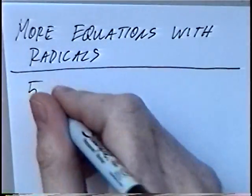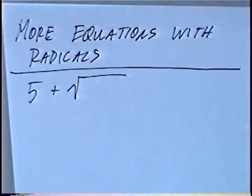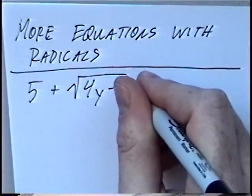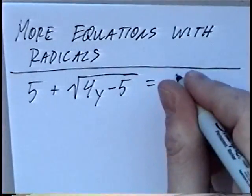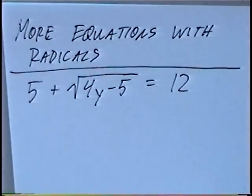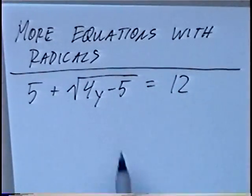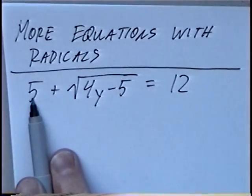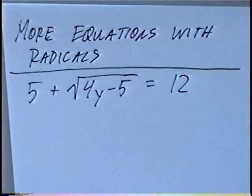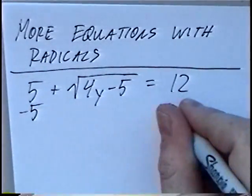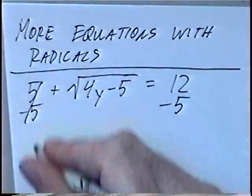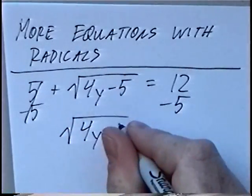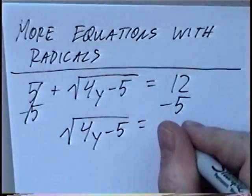First question is 5 plus the square root of 4y minus 5 equals 12. Before we square to get rid of the radical, we want to get the radical or square root by itself. The positive 5 can be moved to the other side by subtracting 5. Canceling the 5s out, we'll be left with radical of 4y minus 5 equals 7.